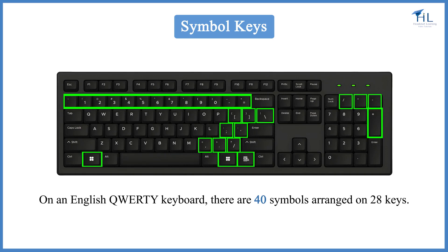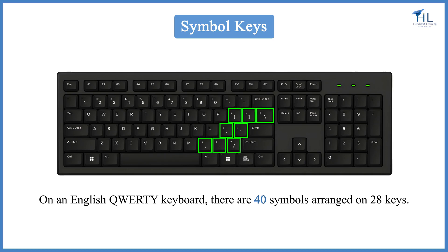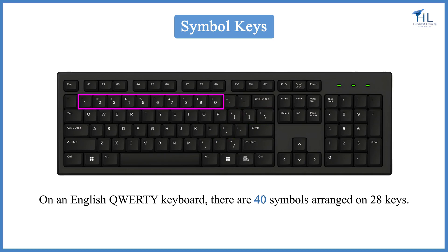There is a difference in numbers because some of the keys have two symbols. As you can see, there are some symbol keys on the keyboard which have two symbols on them, while some have a number and a symbol on it. To type the upper symbol, you need to press and hold the shift key along with the symbol or number key.